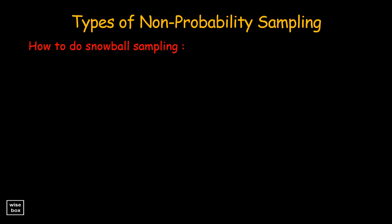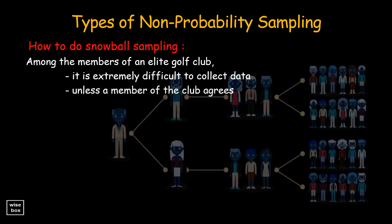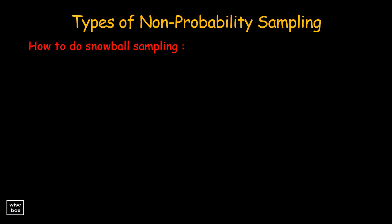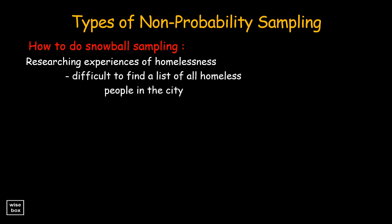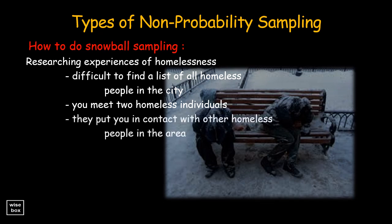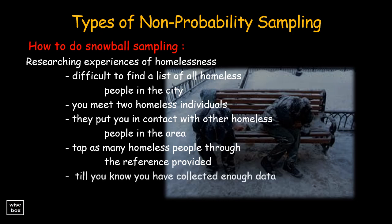How to do snowball sampling? For example, if you are studying the level of customer satisfaction among the members of an elite golf club, you will find it extremely difficult to collect primary data sources unless a member of the club agrees to have a direct conversation with you and provides contact details of other members. Another example: you are researching experiences of homelessness in your city. Since it is extremely difficult to find a list of all homeless people, you meet two homeless individuals who agree to participate, and they put you in contact with other homeless people they know. You can continue to tap as many homeless people as you can find through the references provided, until you have collected enough data for your research.